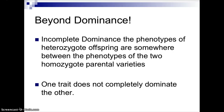Incomplete dominance is when the phenotypes of a heterozygous offspring are somewhere between the phenotypes of the two homozygous parental varieties. Therefore, one trait does not completely dominate the other trait. And remember that this occurs during a heterozygous genotype.